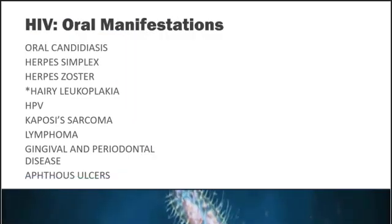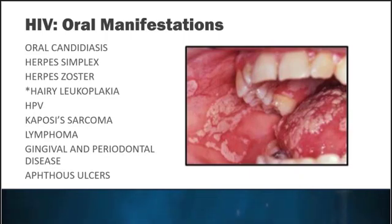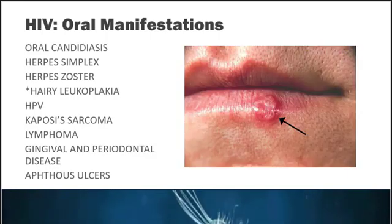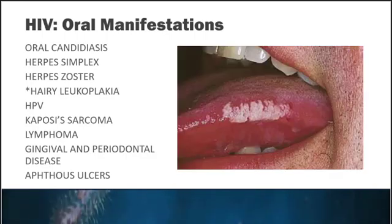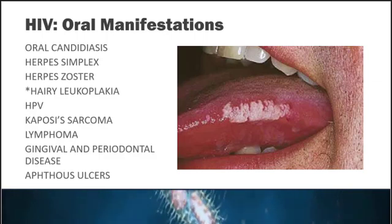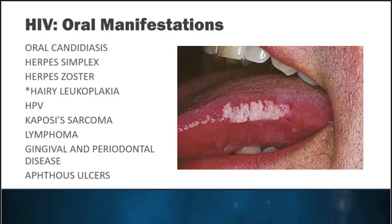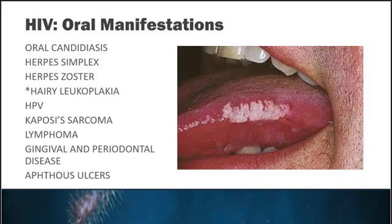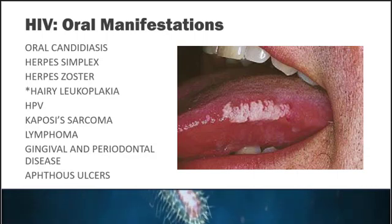Oral manifestations of HIV or AIDS include oral candidiasis, herpes simplex, herpes zoster, and hairy leukoplakia. These patients have a very weakened immune system, making them at high risk for opportunistic infections. Hairy leukoplakia associated with HIV/AIDS appears as white hairy leukoplakia on the lateral borders of the tongue — as opposed to most leukoplakia which happens on the dorsal surface. This presentation is very distinct and something we would want to refer.